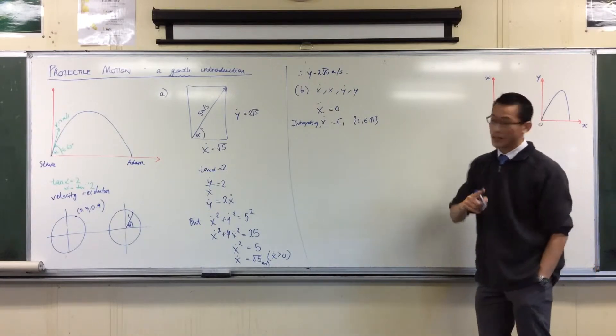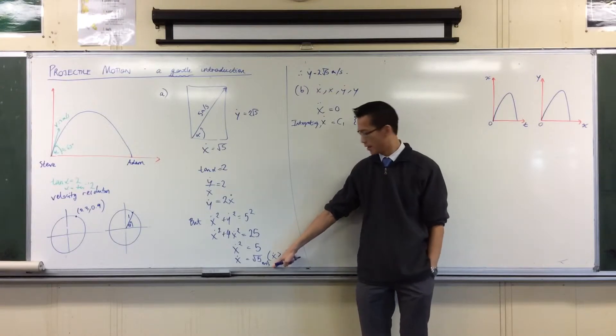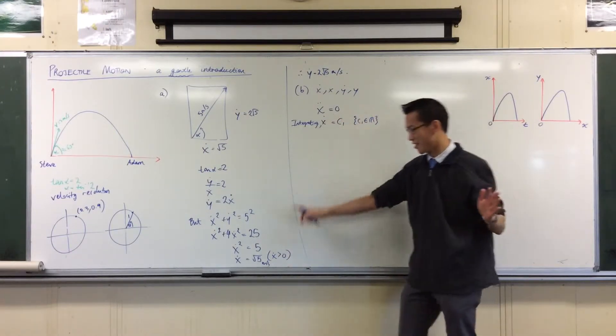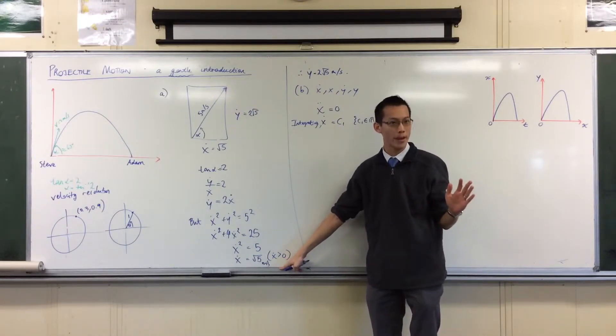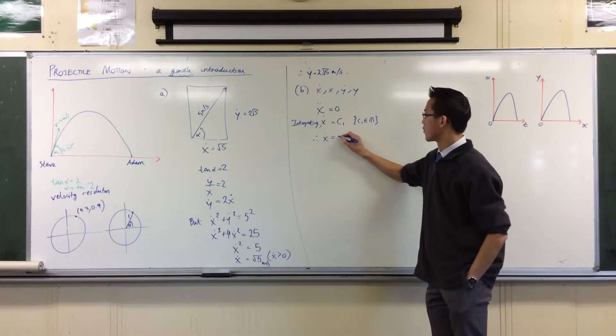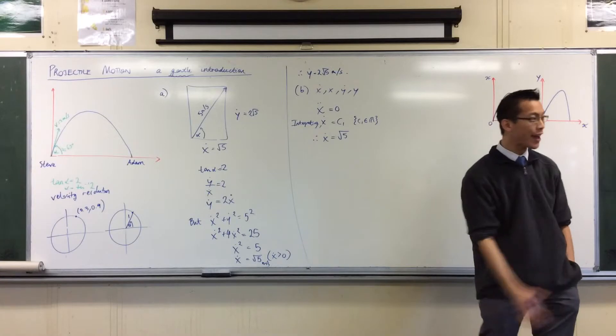But when t equals zero, at initial conditions, you've got this. It's root five. In fact, because you've got no acceleration horizontally, you've always got this, don't you? That is always going to be the horizontal velocity. So you can say, therefore, the velocity will be the square root of five all the time. No exceptions.